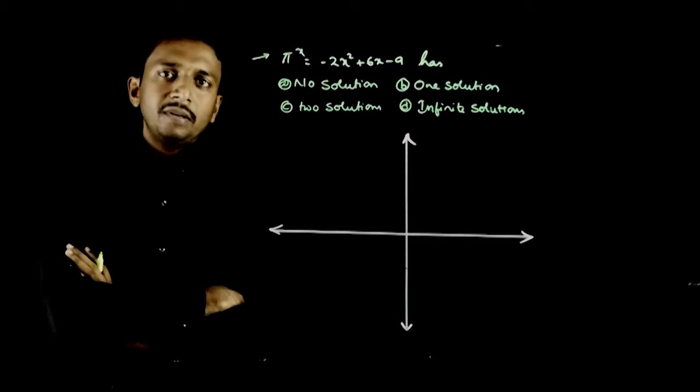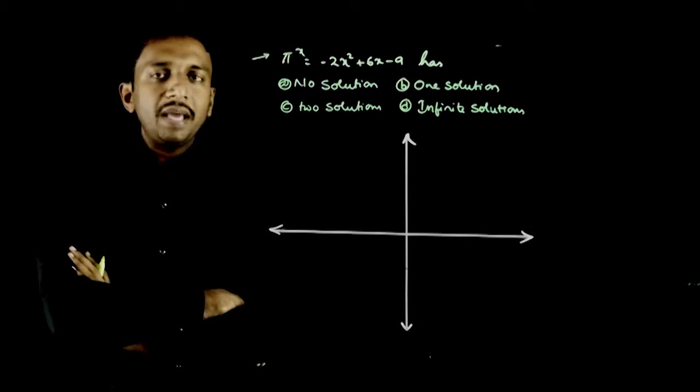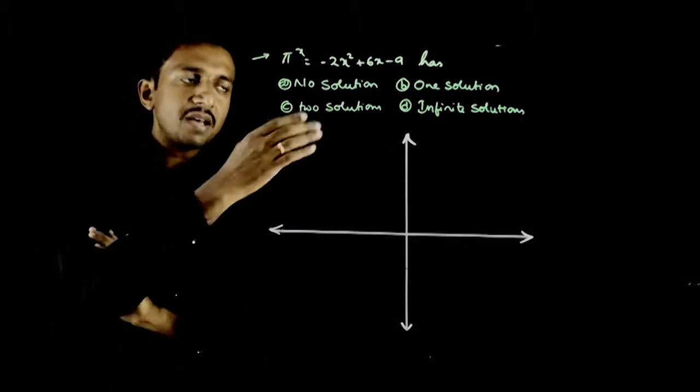So welcome students. This question: when you are given an equation π^x = -2x² + 6x - 9, has how many solutions?